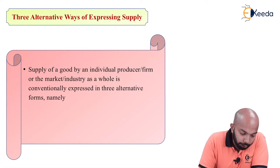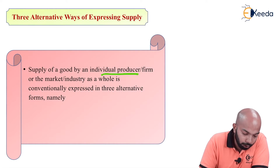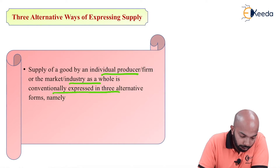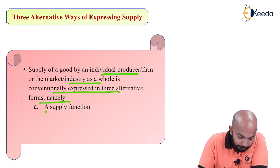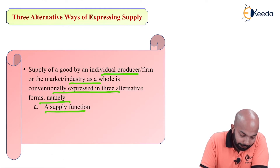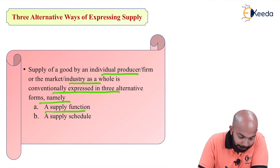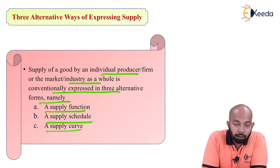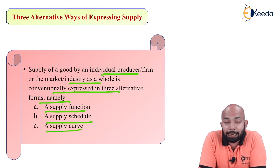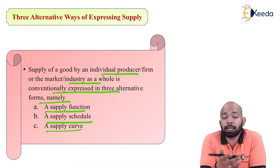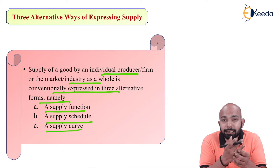Supply of a good by an individual producer, firm, or a market industry as a whole is conventionally expressed in three forms, which are namely: first, a supply function; second, a supply schedule; and third, a supply curve. Basically, supply can be discussed in three basic terms.